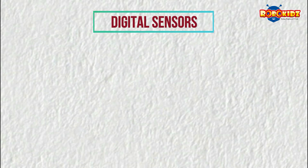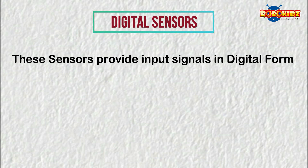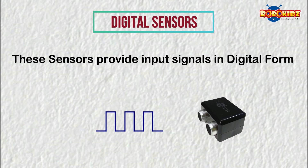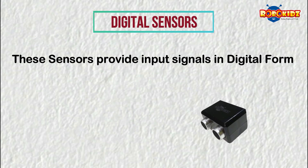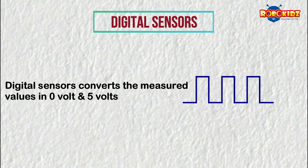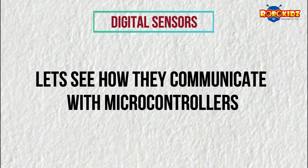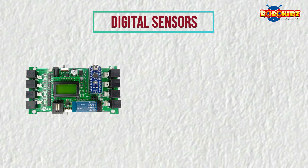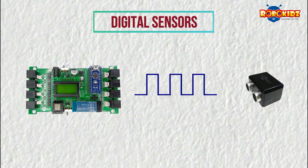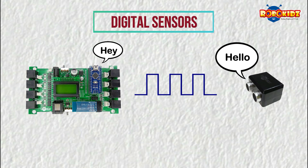Let us take the digital sensor first. These sensors provide input signals to robots in digital format. There is nothing to be confused about when you hear the word digital. Basically, the digital sensor converts the measured values into 0V and 5V. When the digital sensor sends the measured input to the microcontroller, it easily understands it, because the microcontroller itself is a digital device and can understand digital signals. It's like two people communicating with a common language.